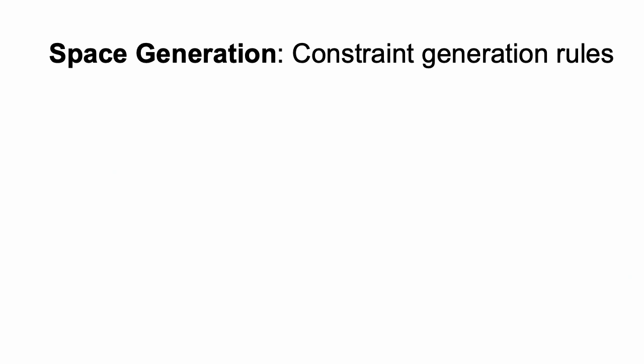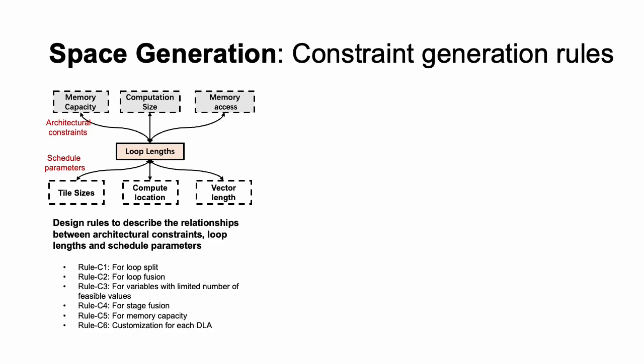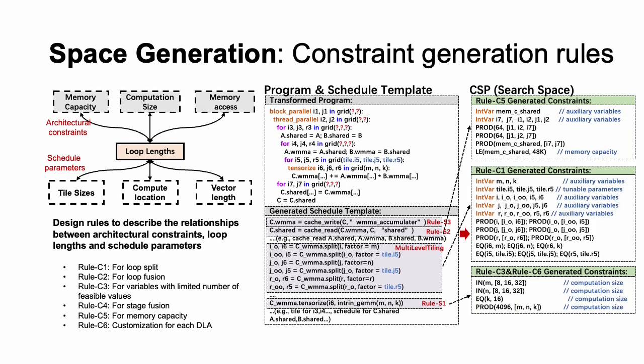For constraint generation, we apply rules on the generated schedule template to generate constraints. There is a gap between architectural constraints and schedule parameters. For example, the architectural constraints on memory capacity are not directly related to the tile sizes or the compute locations, so we have to generate additional constraints to describe such relationships. The main insight is that most architectural constraints can be expressed by functions of loop length, and loop length can be directly related to the schedule parameters. So we designed six constraint generation rules to describe the relationships between architectural constraints, loop length, and schedule parameters. This figure shows an example of the constraint generation. The generated constraints form a constraint satisfaction problem, which is our search space.